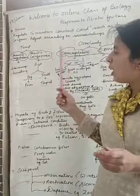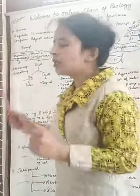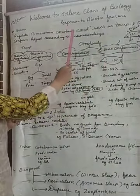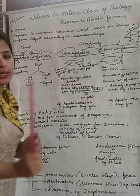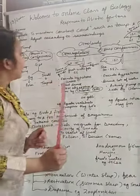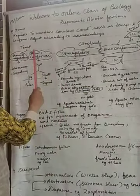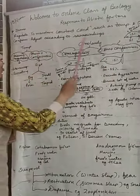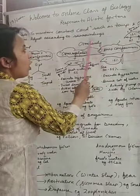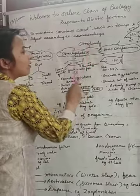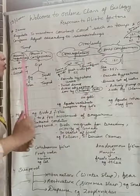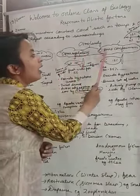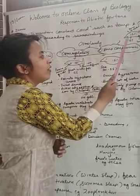So now I would like to proceed with the first response, that is regulator. For that I will take two parameters — temperature and osmolarity. On this basis, organisms have been divided into two parts: osmoregulators and osmoconformers.